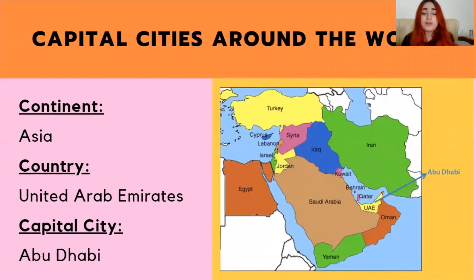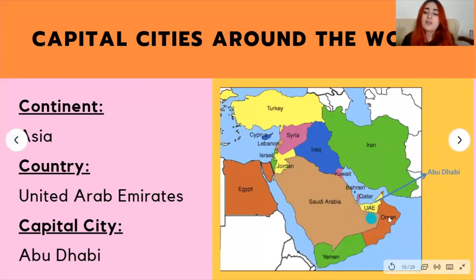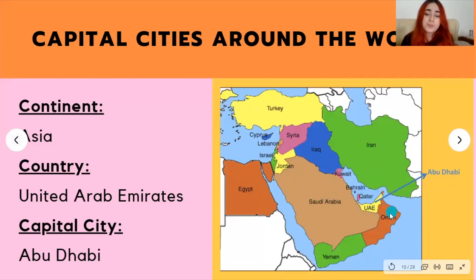Next, we have Abu Dhabi, located in the United Arab Emirates, also known as the UAE, in the Asian continent. It's surrounded by many beautiful Middle Eastern countries such as Saudi Arabia, Kuwait, Iran, Bahrain, and Qatar. Abu Dhabi is known for its beautiful Arab culture, delicious food, and some interesting music.